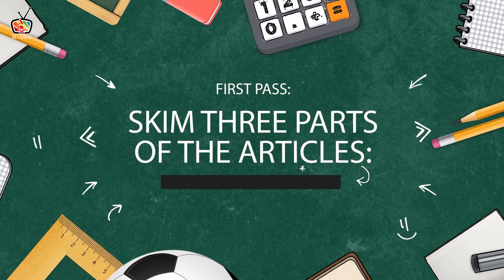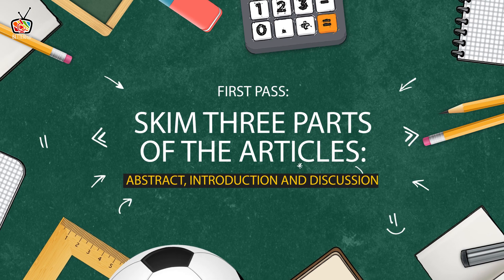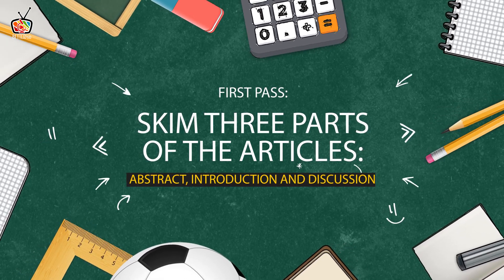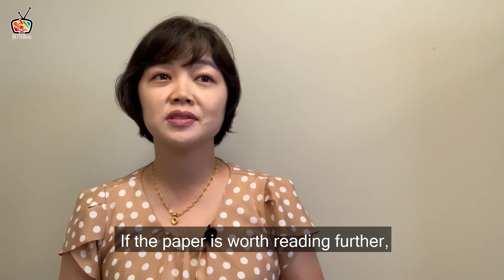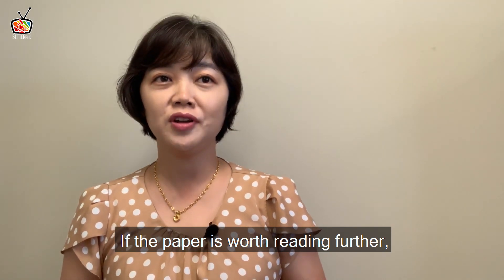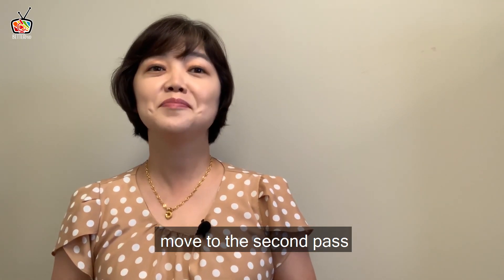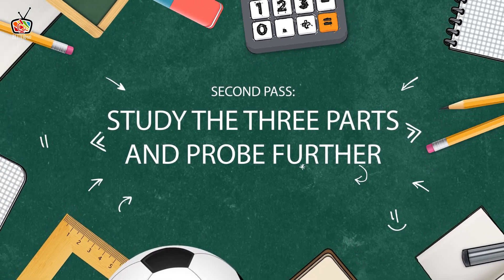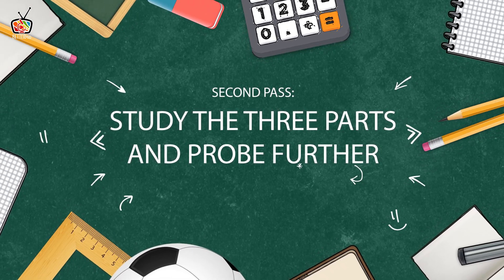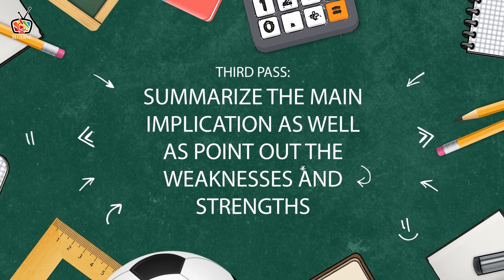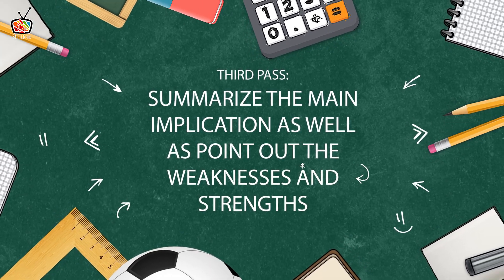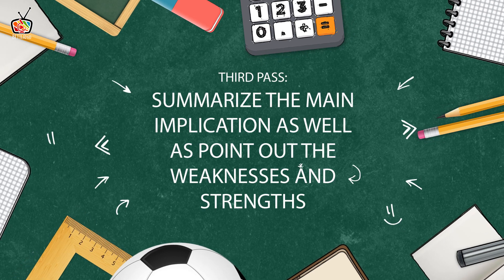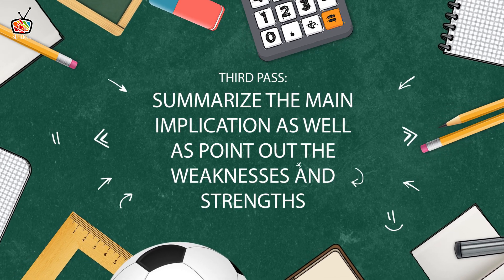Remember the three passes. First pass: skim three parts of the article — abstract, introduction, and conclusion. If the paper is worth reading further, move to the second pass. Second pass: study those three parts and probe further. And third pass: summarize the main implications as well as point out the weaknesses and strengths of the paper.